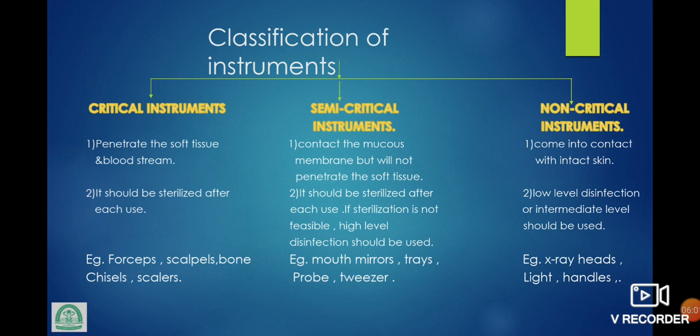Classification of instruments — Spaulding classification: the most important classification. Critical instruments penetrate the soft tissue or bloodstream. Semi-critical instruments contact the mucous membrane but do not penetrate soft tissue. Non-critical instruments come in contact with intact skin. Critical instruments should be sterilized after each use. Semi-critical instruments should be sterilized after each use; if not feasible, should undergo high-level disinfection. Non-critical instruments can use low-level or intermediate-level disinfection. Examples — critical: forceps, scalpels, bone chisels, scalers. Semi-critical: mouth mirror, tray, probe, tweezers. Non-critical: X-ray head, light handle.